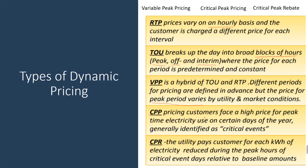The fourth type is critical peak pricing, where customers face a high price for peak-time electricity use on certain critical event days — for example, in India, consumers pay higher charges during Diwali or New Year periods when demand is high. The fifth type is critical peak rebate, which is the opposite: the utility provides an incentive to consumers if they save electricity during a critical event. The utility pays the consumer for each kilowatt-hour reduced — for instance, if their baseline is 10 kWh and they consume only 5 kWh, they receive an incentive for the reduced 5 kWh.